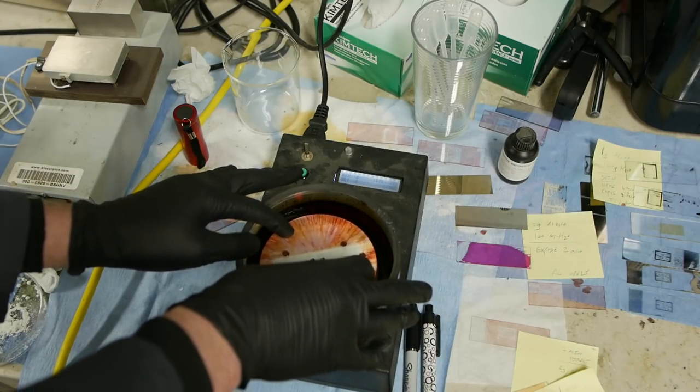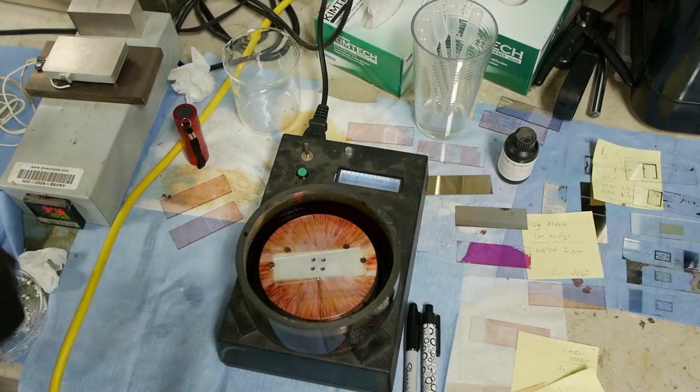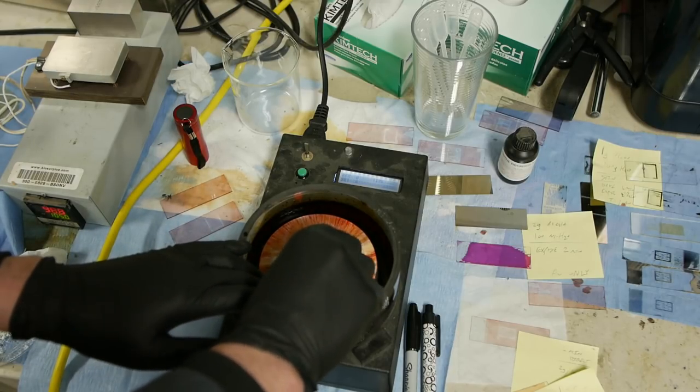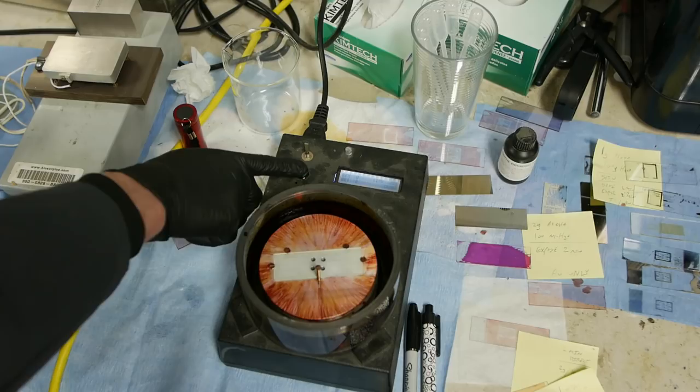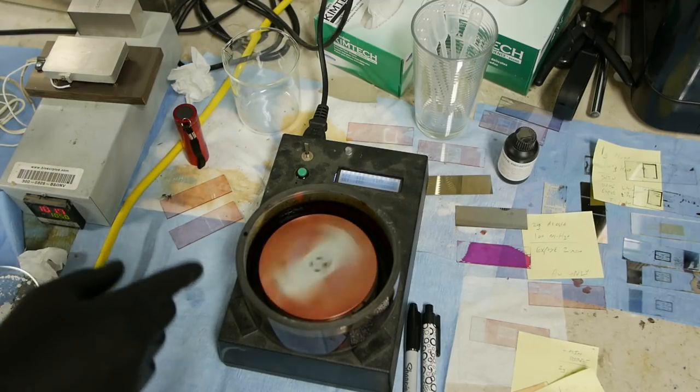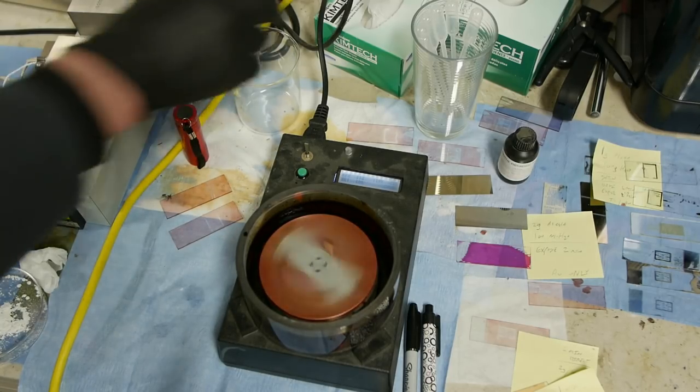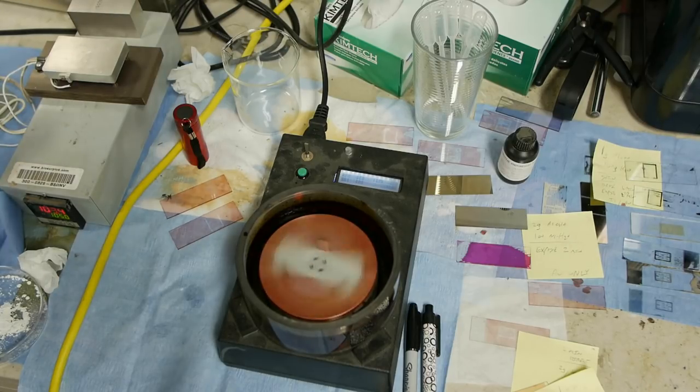Okay, then we will load the slide into this handy dandy spin coater. And I think I have an old video on this that I'll link to if I can find it. And we'll put it into its low speed mode to dispense the photoresist onto it.